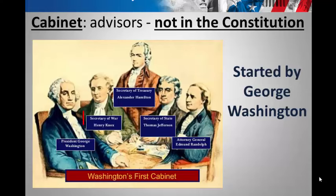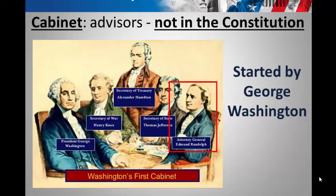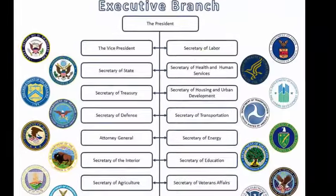This Cabinet tradition was started by the first President, George Washington, who decided to create these advisors. He had a Secretary of War, a Secretary of the Treasury — Alexander Hamilton — dealing with money, and probably why his face is on our $10 bill. Secretary of State Thomas Jefferson advised the President on what was going on around the world with other countries. And an Attorney General — remember, an attorney is a lawyer — so this was an advisor on legal matters.